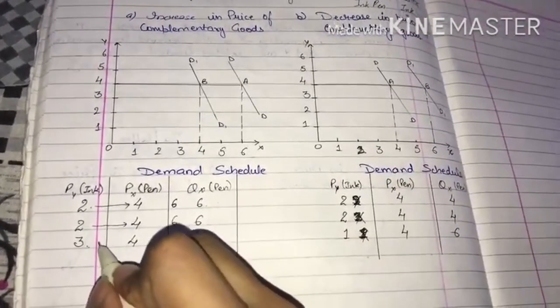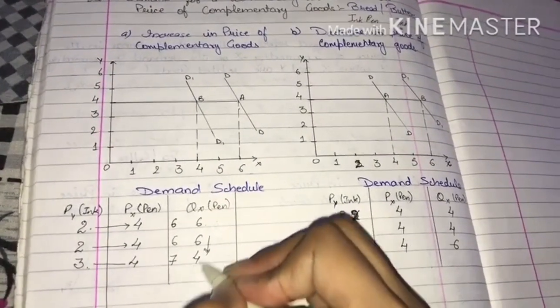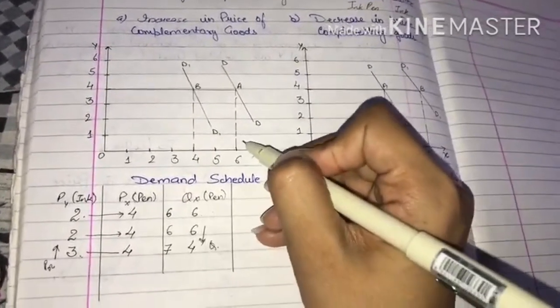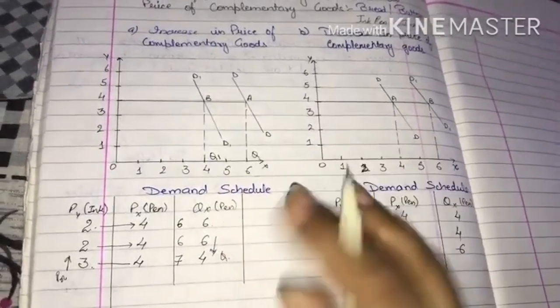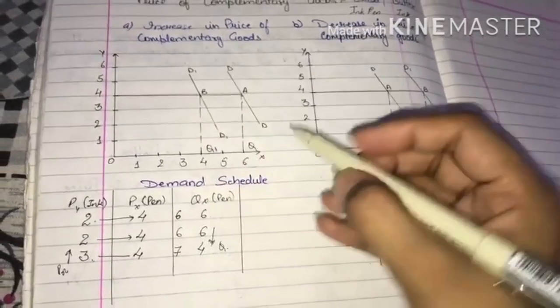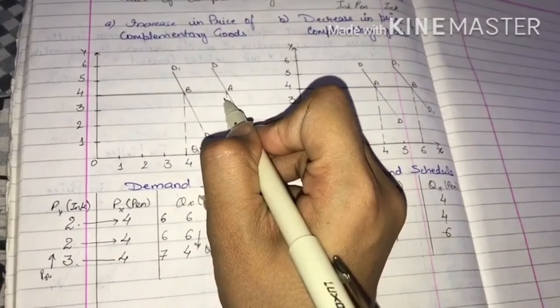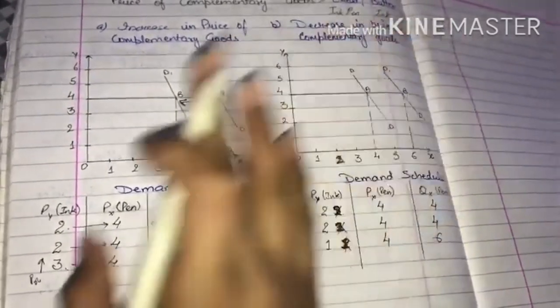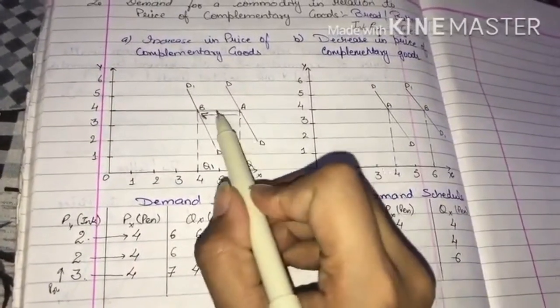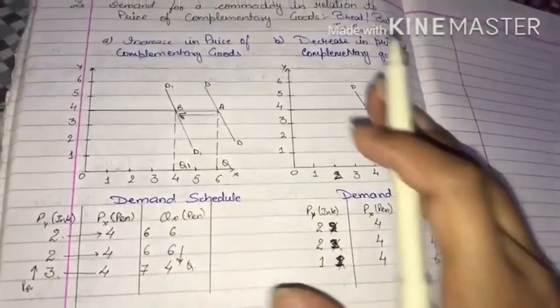When I demand six pens again, the combined price becomes 7 rupees because of the ink price increase. So I have to decrease my demand. The price went up, so quantity decreased from 6 to 4. This plots a new point B on the graph instead of A. My demand curve shifted from DD to D1 D1, which is a backward shift or decrease in demand curve.